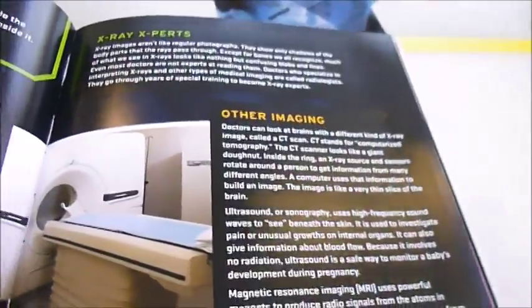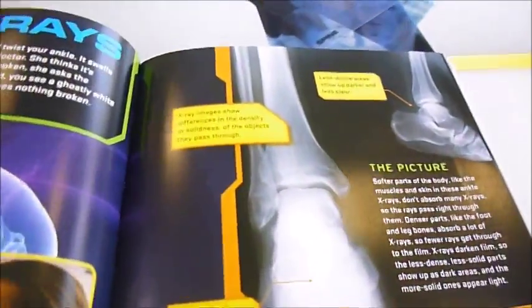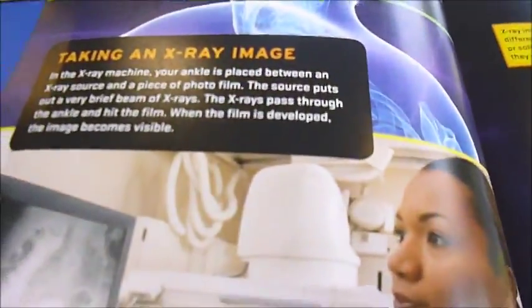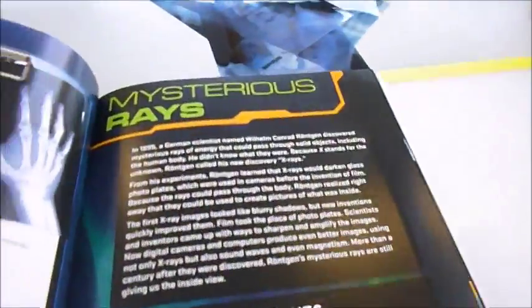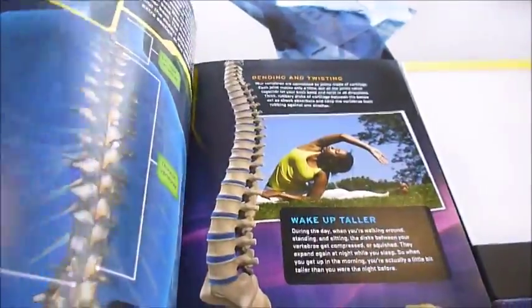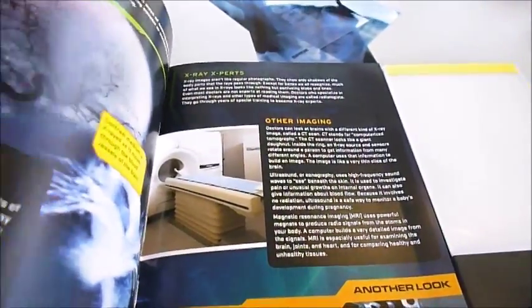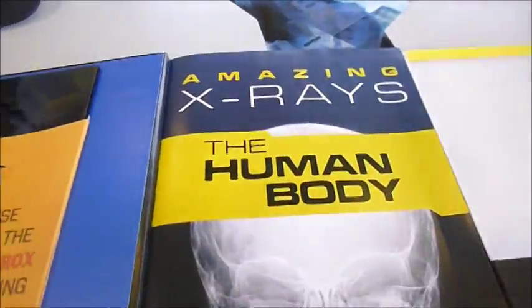X-ray, CT scans, MRI, ultrasound and all the imaging was discovered by the German scientist Wilhelm Rotken in 1895, noticing that mysterious rays could pass through the body. Sound waves, magnetic fields - we love this, so it's called Amazing X-Rays.